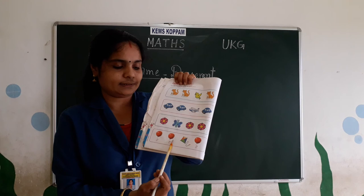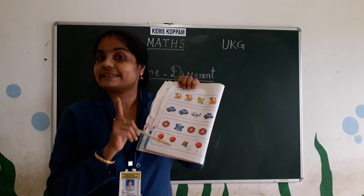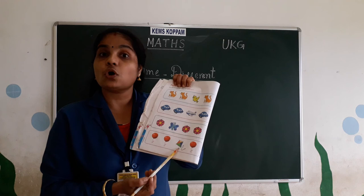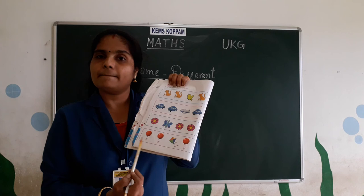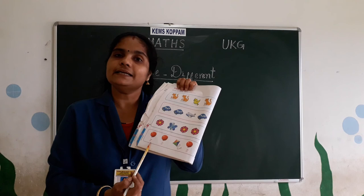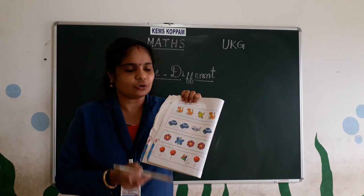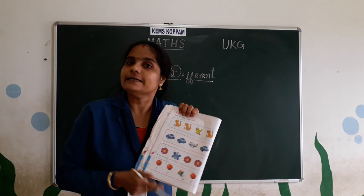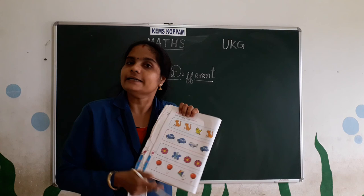Look. So, these are balloons, but only one is a kite. This is a kite. So, this is the odd one out. This kite is odd one. These balloons are same, but this kite is different. This kite is different from the balloons. Okay. Understood? So, you can do this activity with the help of your parents. Circle the thing that is different.